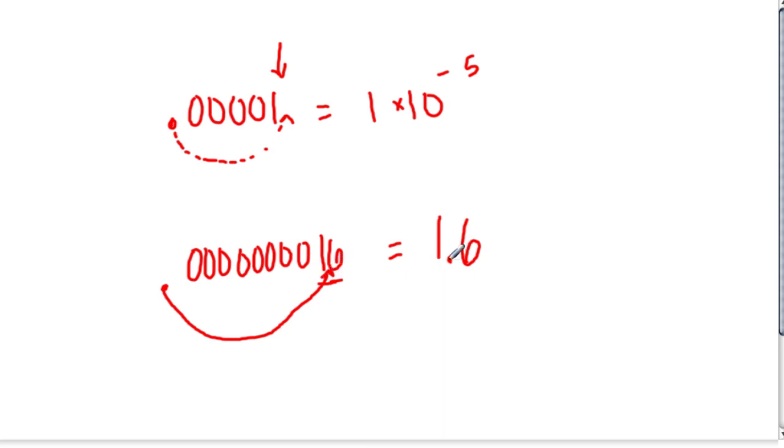Now, what power of 10 do we use? Well, count how far we hopped. 3, 6, 7, 8, 9 places. But, this is a really small number, so we're going to deal with negative exponents. That's the basic idea of turning standard form numbers into scientific notation.